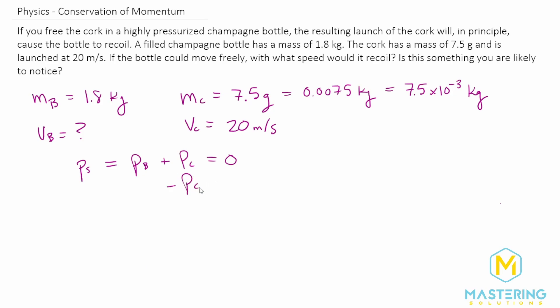Move the momentum of the cork over to the other side of the equation. So the momentum of the bottle is equal to the negative momentum of the cork. If we break that up, the mass and velocity of the bottle is equal to the negative mass times velocity of the cork.